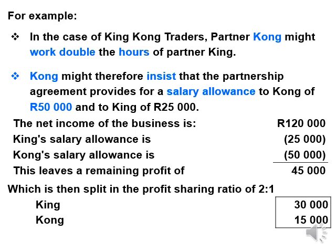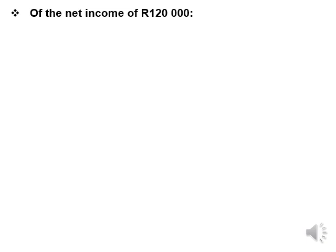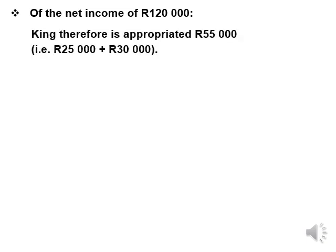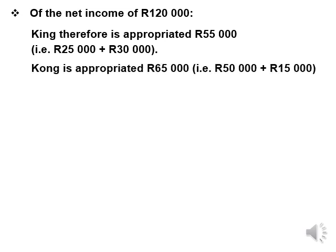Please note the salary allowance to a partner is paid out of the profit. So out of the net profit of $120,000, King was appropriated $55,000 — $25,000 was his salary allowance and $30,000 was his share of the remaining profit. Kong was appropriated $65,000 — $50,000 for his salary and $15,000 as his share of the remaining profit.